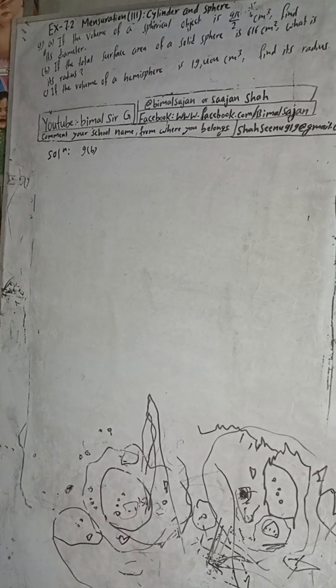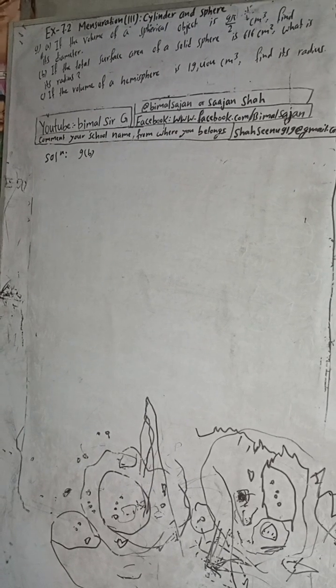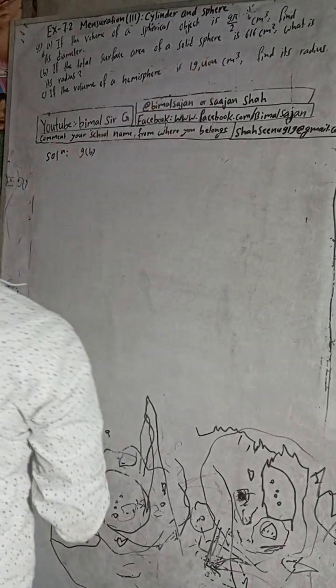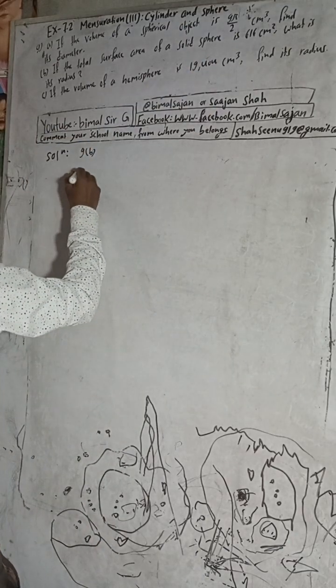If the total surface area of a solid sphere is 616 cm², find its radius. So we are given the total surface area of a solid sphere.